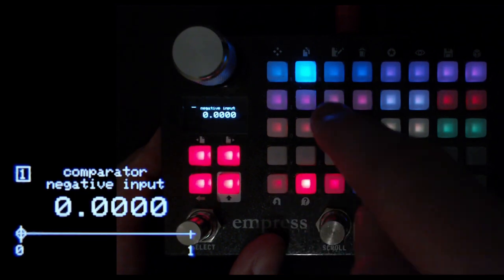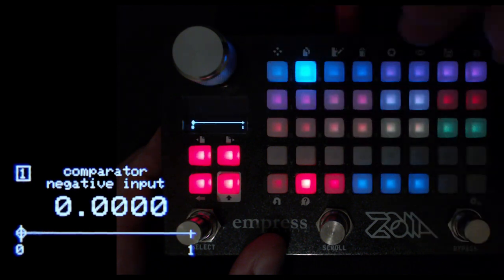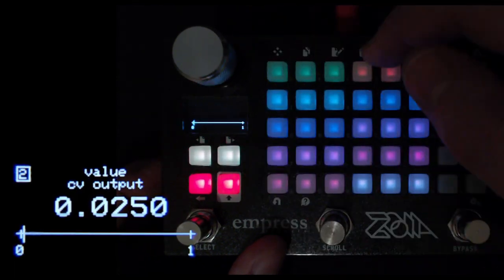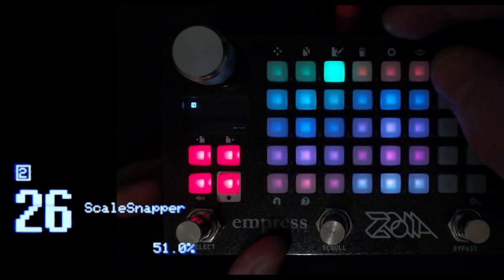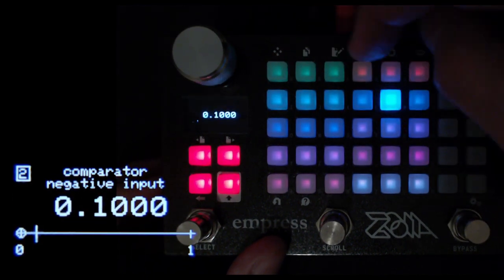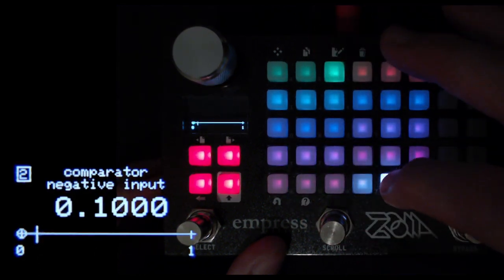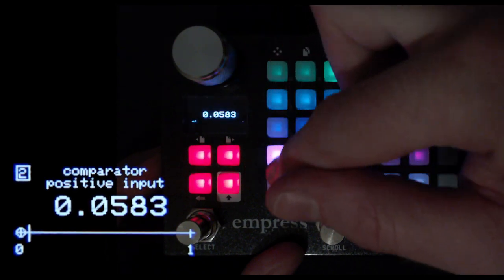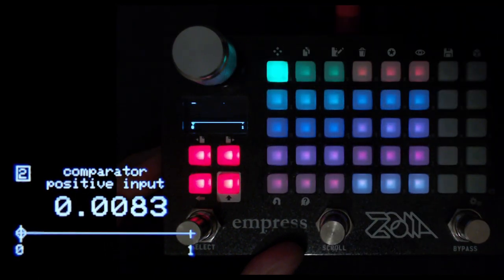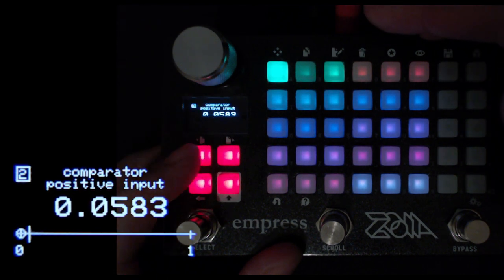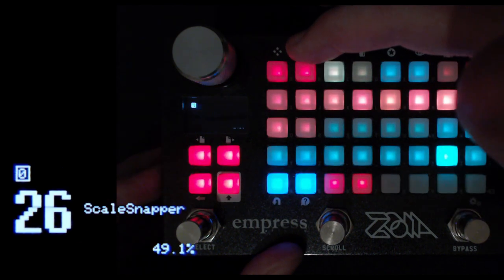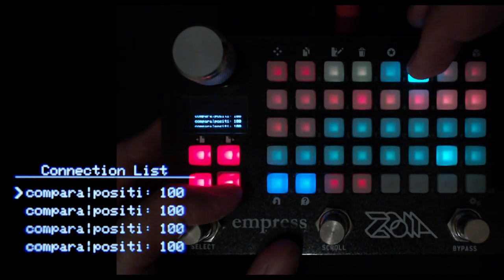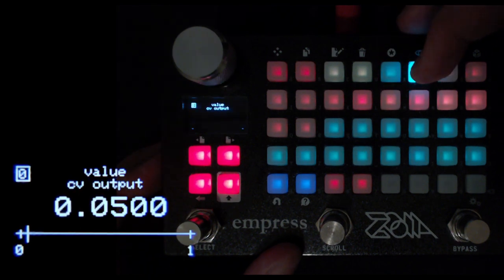We've taken our scale definition values and connected them to the negative inputs of 12 comparator modules. All these have the scale definitions connected. The positive inputs of all these comparators are connected to the value that we created on the first page, which is the input note value minus the octave decimal.